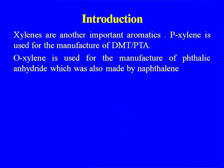Xylenes are another important aromatic. Para-xylene is used for the manufacture of DMT and terephthalic acid. Ortho-xylene is used for the manufacture of phthalic anhydride, which finds wide application in the paint industry as a plasticizer. Earlier the route was through naphthalene, but now all phthalic anhydride is produced from ortho-xylene because ortho-xylene is one of the major byproducts obtained while making para-xylene.